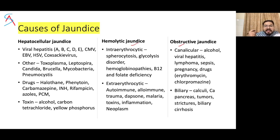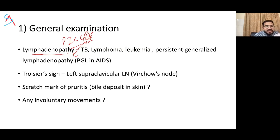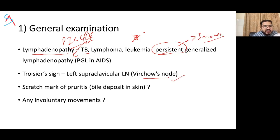Other causes of jaundice include hepatocellular, hemolytic, or obstructive etiology, antimalarial drugs, leukemia with hepatic infiltration, hemolytic anemia, and portal lymph node obstruction. Lymphadenopathy will be present in TB, lymphoma, leukemia, and persistent generalized lymphadenopathy (PGL), which is part of HIV/AIDS syndrome and persists for more than three months.